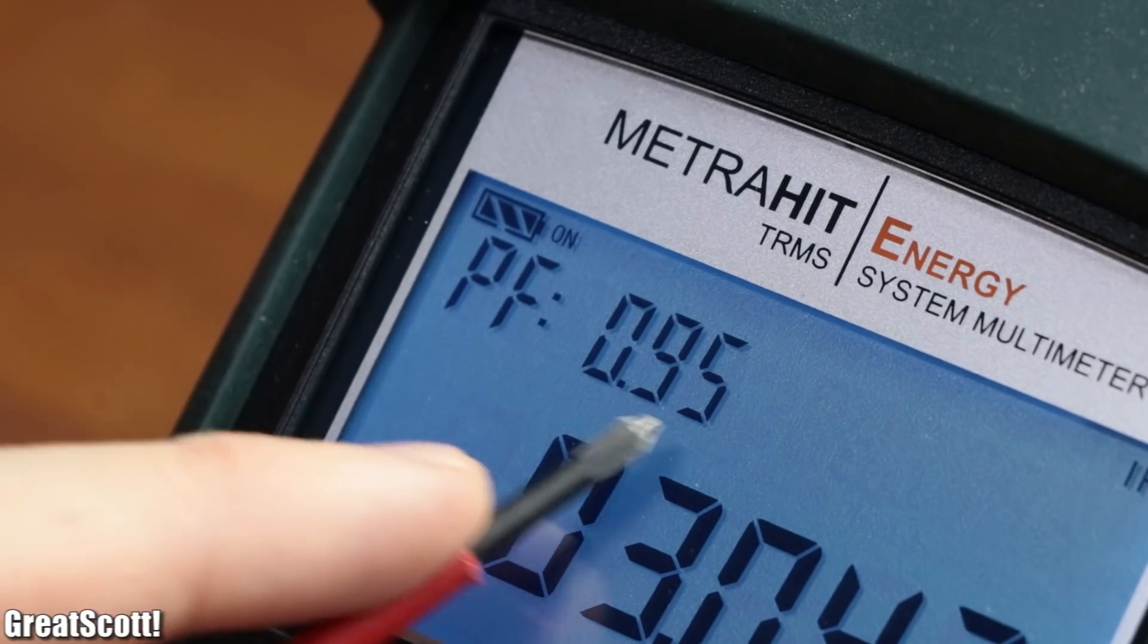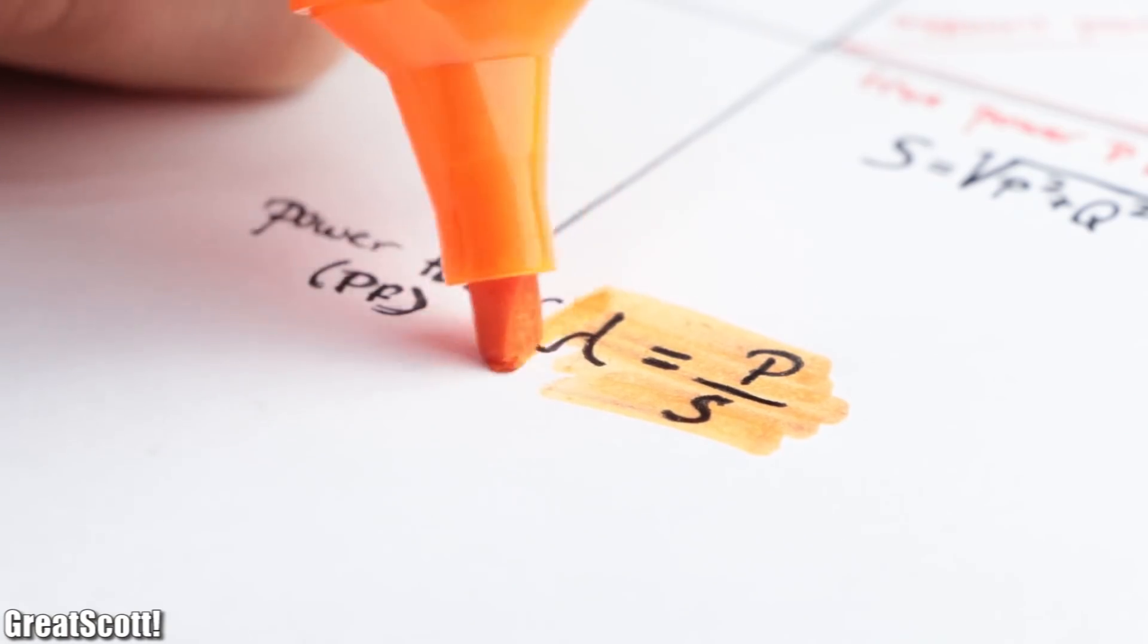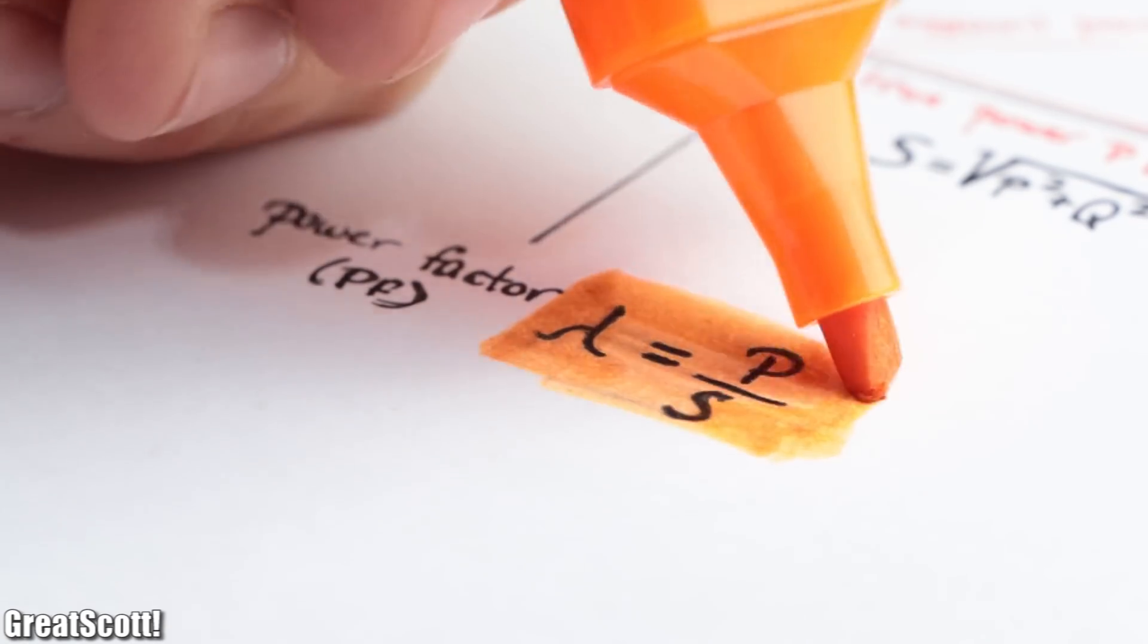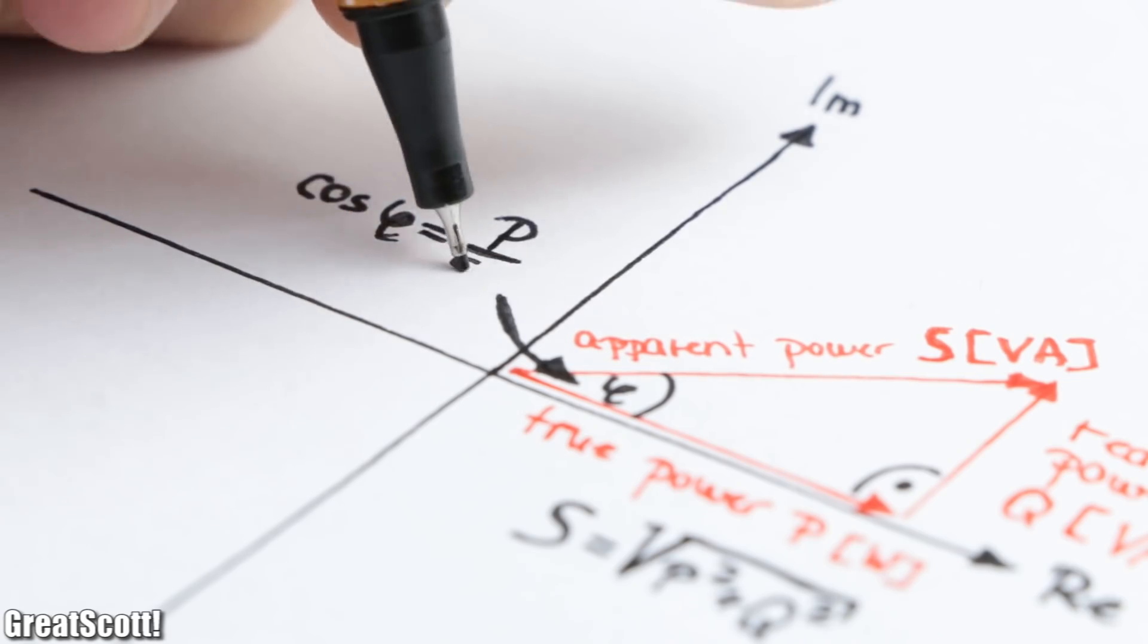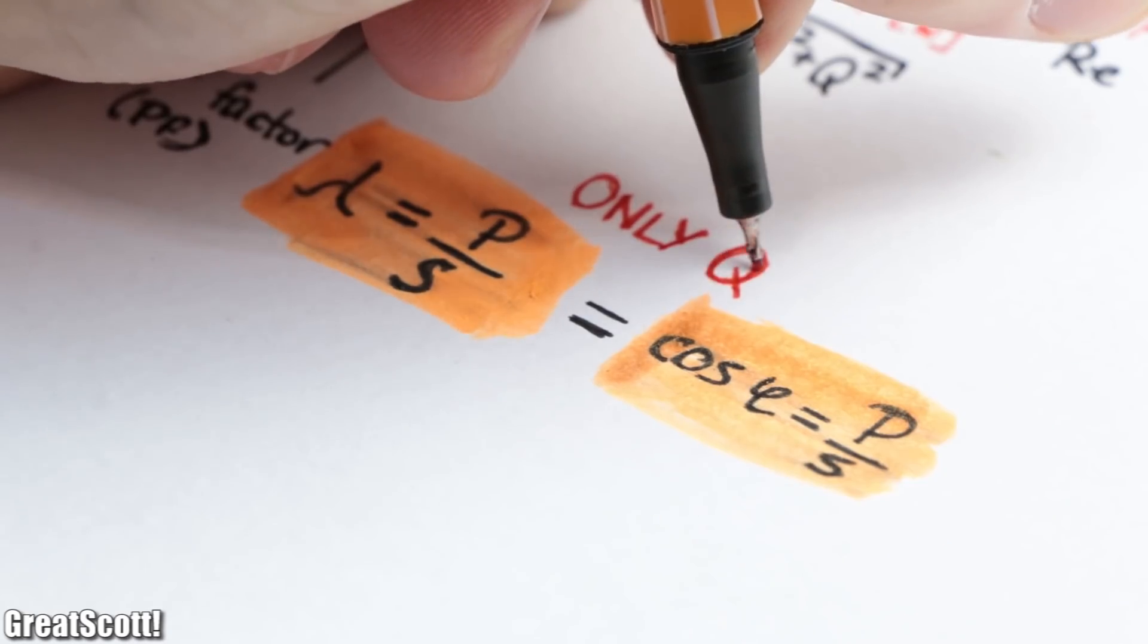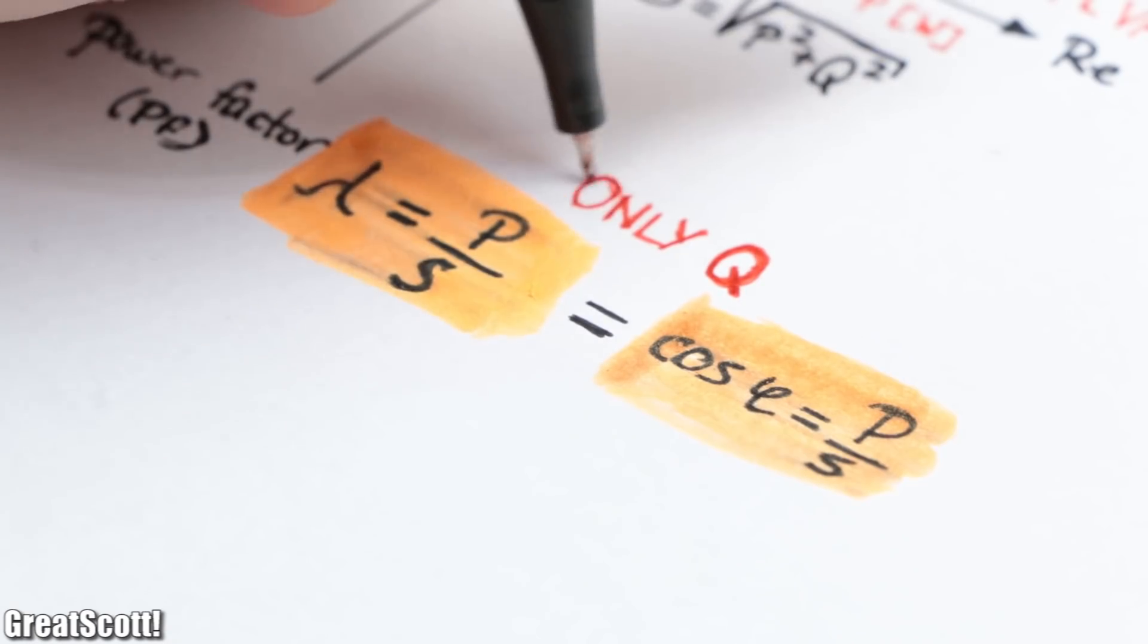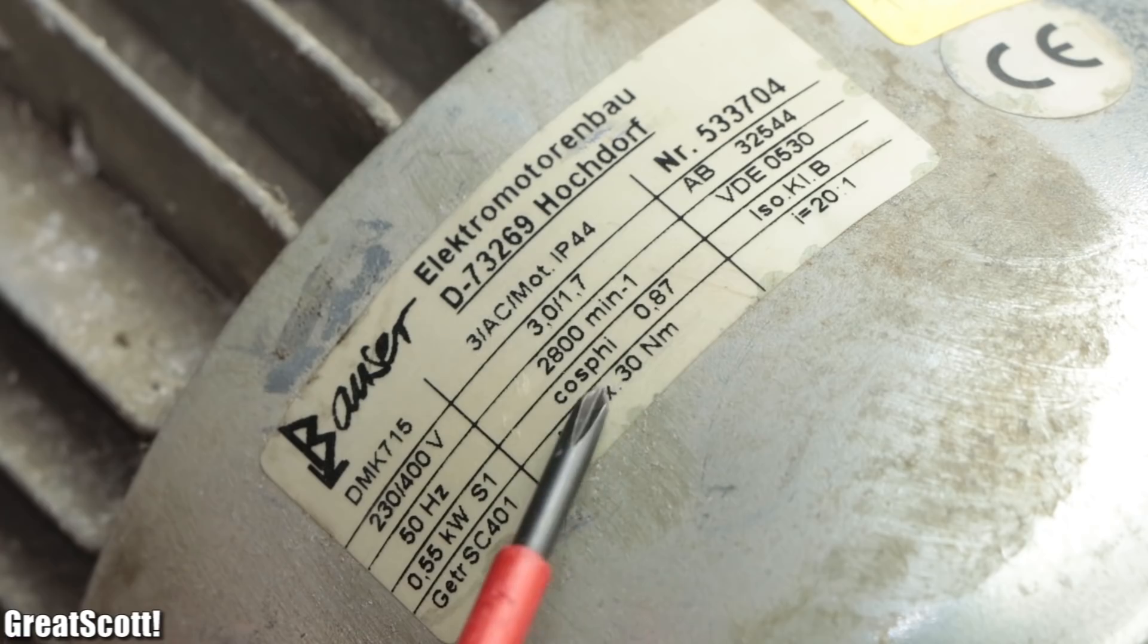So what is left is the power factor which is mentioned on my energy meter. Now the power factor describes the relation between true power and apparent power. But wait a minute, doesn't that mean that the cosine phi of our power triangle is also the power factor? Well for reactive power which only consists of phase shifts due to inductors and capacitors, that is correct. That is also why AC motors usually come with a cosine phi rating rather than a power factor rating.